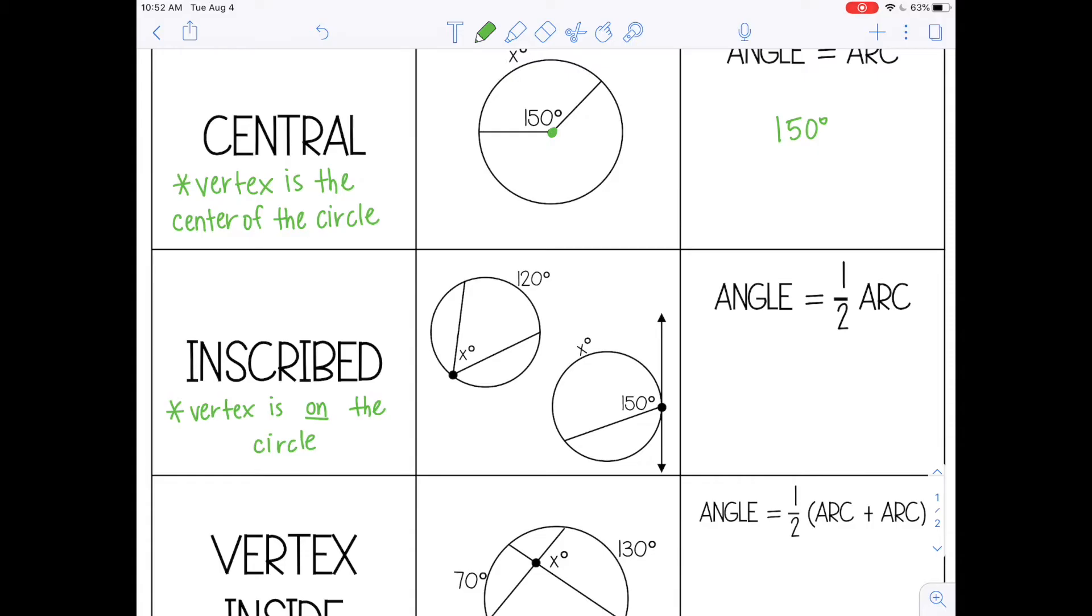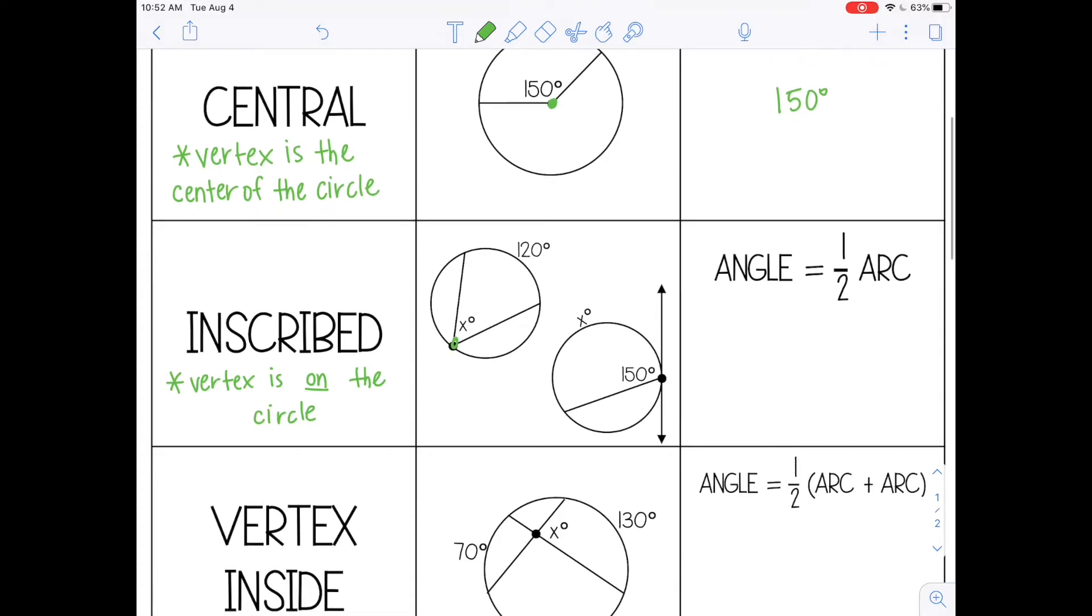Now, inscribed angles can look a couple different ways. They can look like this, which kind of looks like a V shape. Or they can look like this, where one of the lines of the angle goes outside the circle. This is a tangent line with a chord. But because the vertex is still on the circle, this is still an inscribed angle.